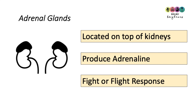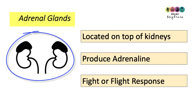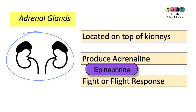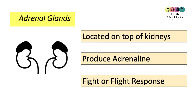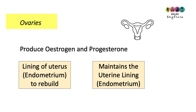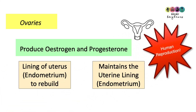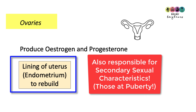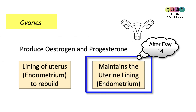The adrenal glands are located on top of the kidneys — one on top of each kidney. They produce the hormone adrenaline, sometimes referred to as epinephrine, and are responsible for your fight or flight response. In females, the ovaries produce two hormones: oestrogen and progesterone, which you'll learn more about in human reproduction. Oestrogen is responsible for building up the lining of the uterus — the endometrium — and after day 14, progesterone maintains that endometrium.